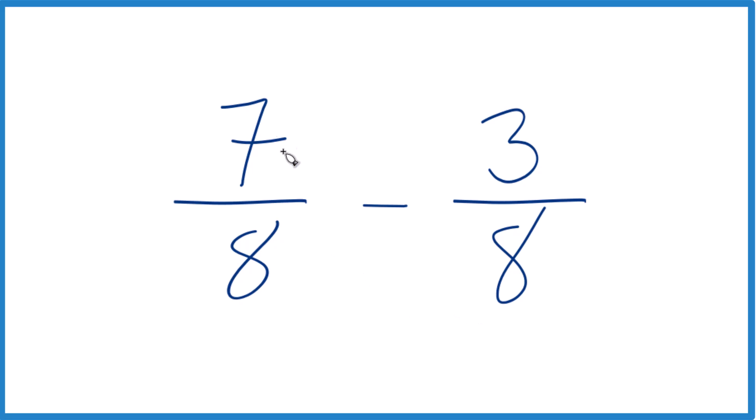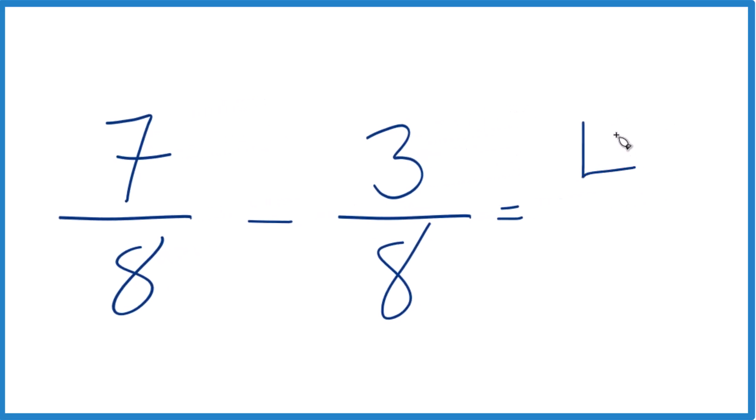So what we'll do is we're going to take the numerators, 7 minus 3, and that gives us 4, and then you just bring that denominator across 8. And 7 8ths minus 3 8ths, that does equal 4 8ths.